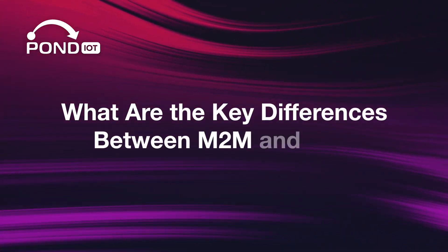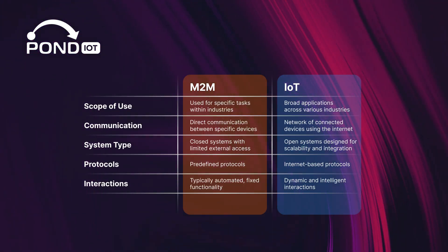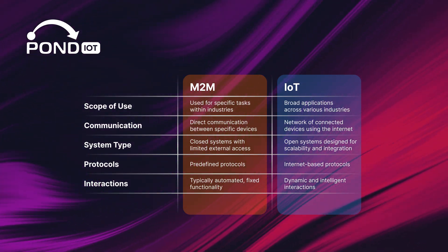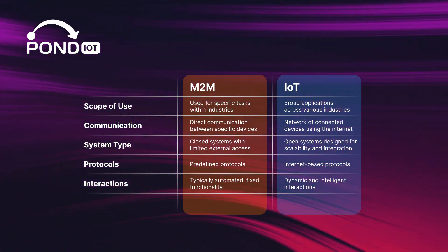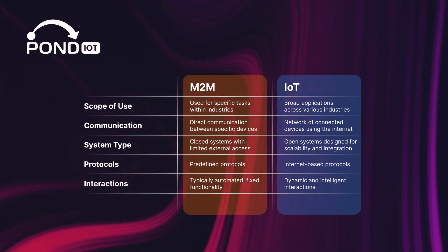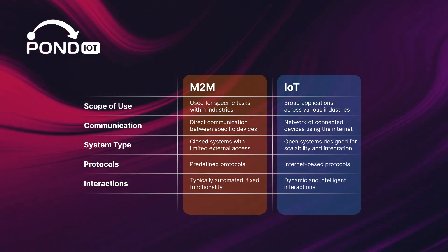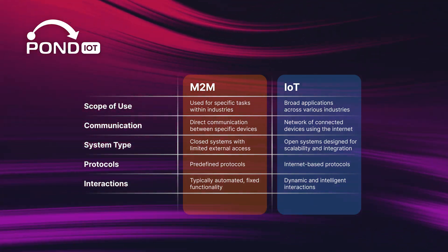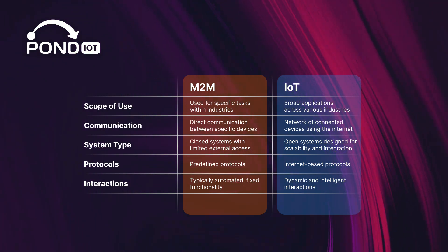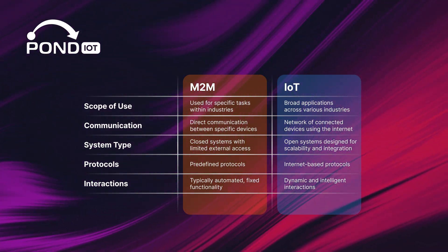So, what are the key differences between M2M and IoT? M2M is typically used for specific tasks and involves direct communication between devices. It operates within closed systems with predefined protocols. In contrast, IoT encompasses a broader range of applications and uses Internet-based protocols for communication. It aims for high interoperability among diverse devices and systems, allowing for more complex and intelligent interactions.